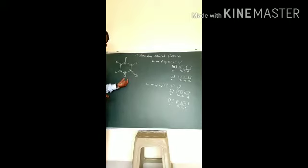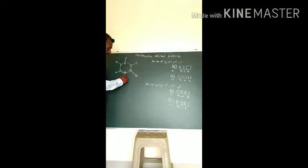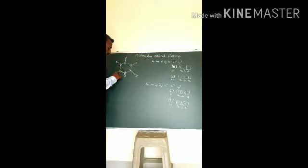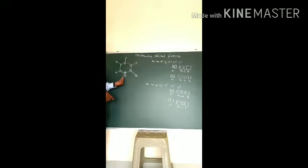Numbering always starts with the heteroatom, like nitrogen. It is one, two, three, four, five, and six. So there are five carbons and one nitrogen, as the name 'pyridine' suggests.